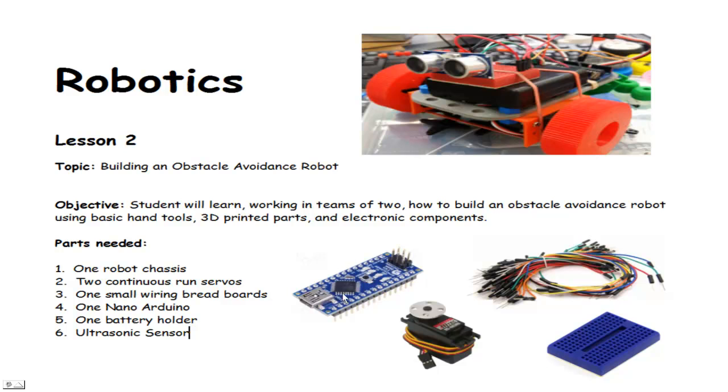This is a little Arduino, the nano version, so it's pretty small. We've got a little USB connection here so that we can program it. We've got servos. There's two of these. These are what we call continuous run servos. We use them as little motors to drive the robot wheels.